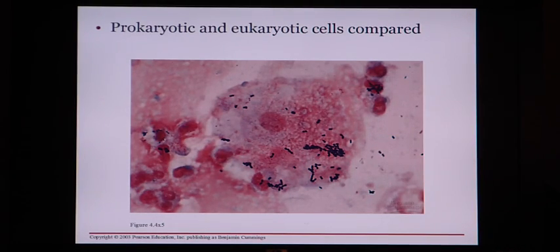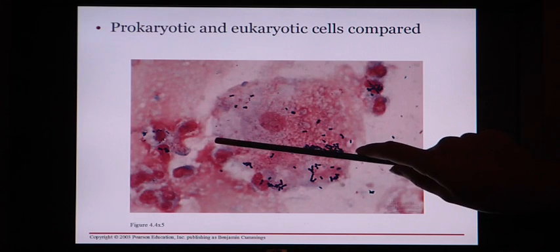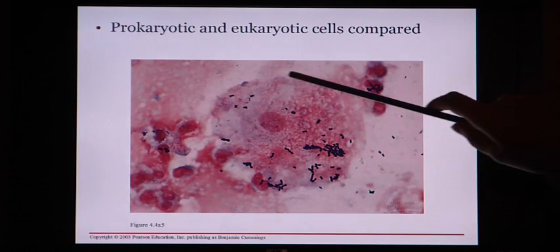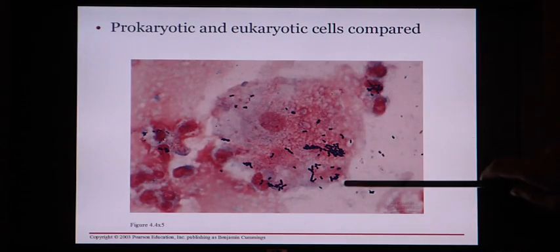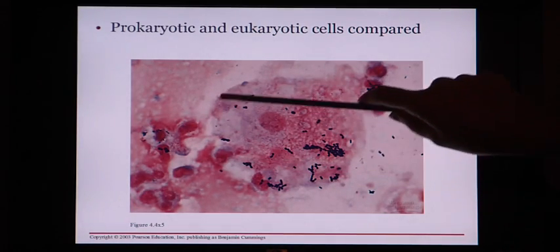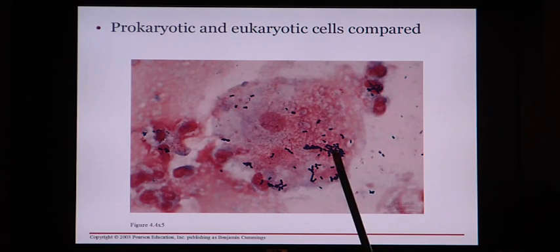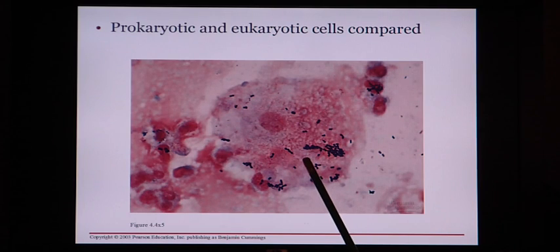Eukaryotic cells — plant and animal cells — do have a nucleus, and they are also much, much bigger than prokaryotic cells, even though both are microscopic. Looking at this outline: the large shape here is a eukaryotic animal cell. The little purple specks on it are bacteria, which gives you an idea of how small bacteria are in comparison to eukaryotic plant or animal cells — a big size difference. We can also see a nucleus, which is what's special about eukaryotic cells.